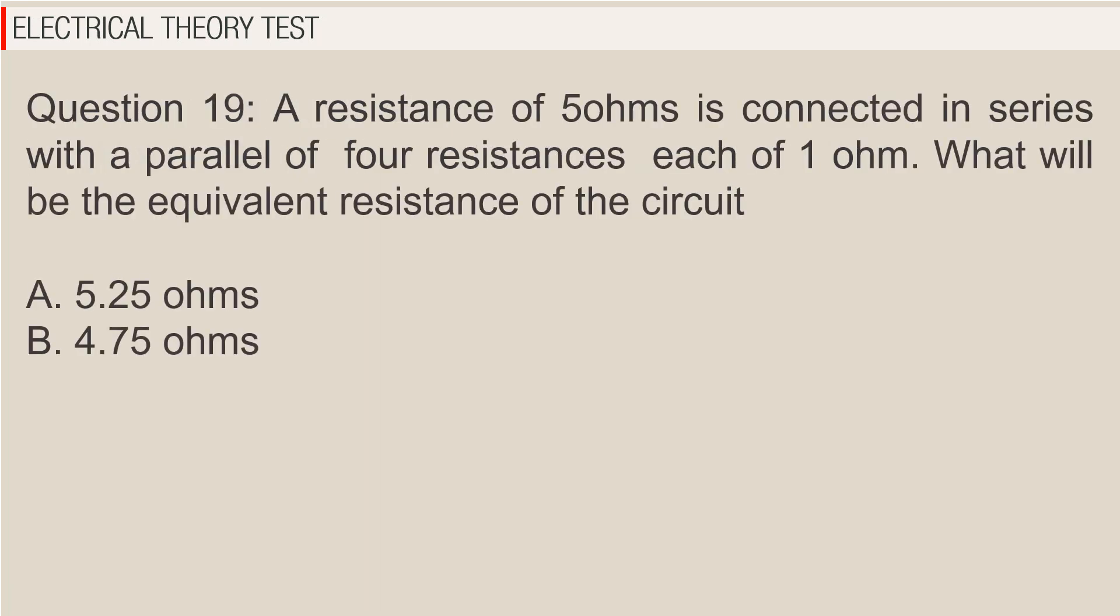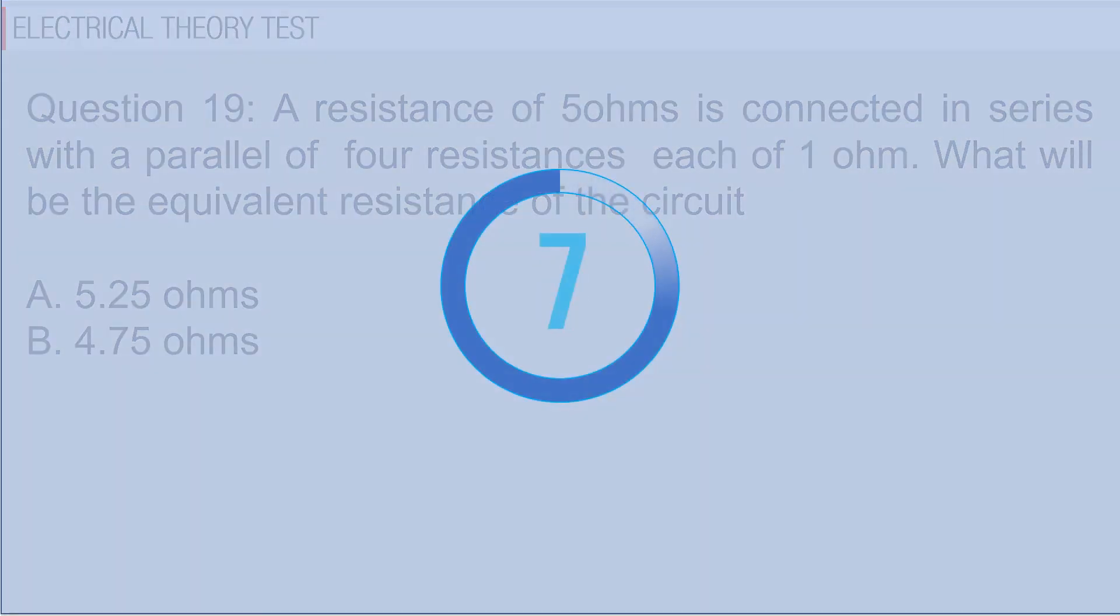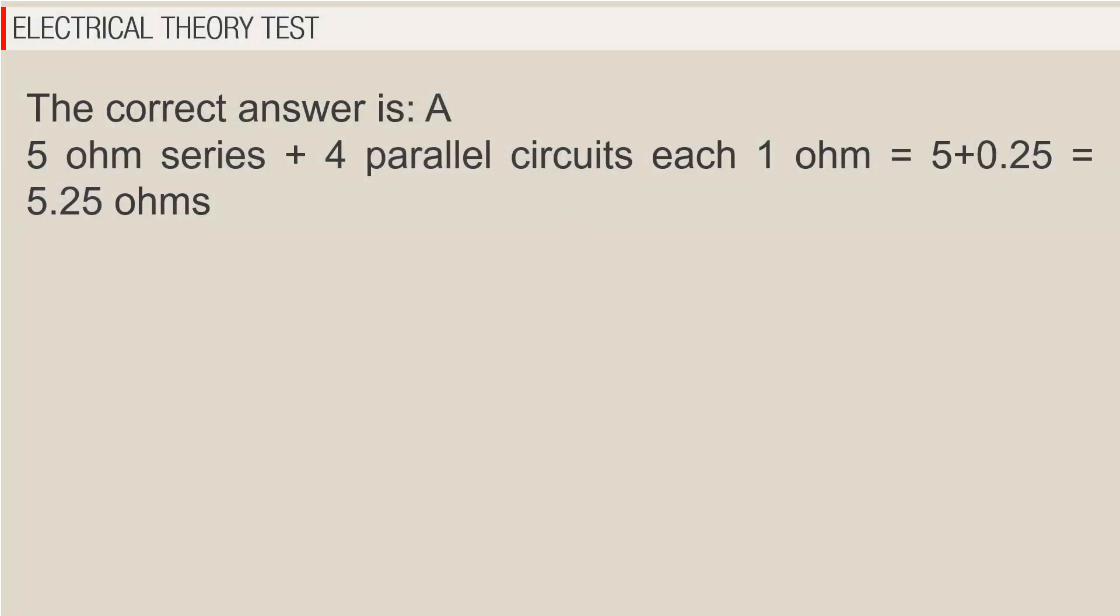Question 19: A resistance of 5 ohms is connected in series with a parallel of 4 resistances each of 1 ohm. What will be the equivalent resistance of the circuit? A. 5.25 ohms, B. 4.75 ohms. The correct answer is A. 5 ohm series plus 4 parallel circuits each 1 ohm equals 5 plus 0.25 equals 5.25 ohms.